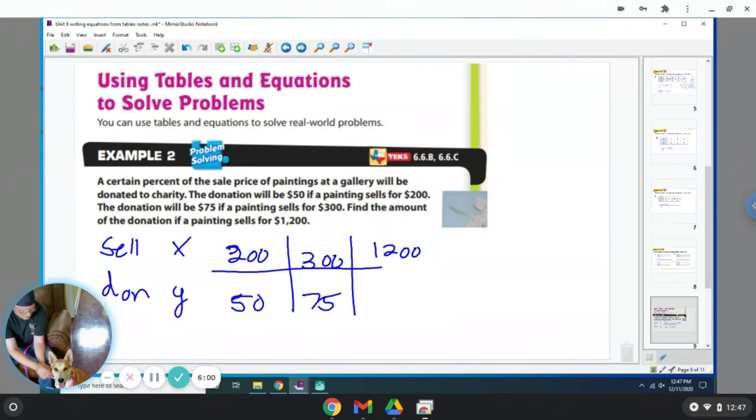So what they're doing is they're trying to figure out what is $1,200. So you need to figure out the equation. So since we're working with these bigger types of numbers, I would assume it's a multiplicative relationship. And so what's happening is how did $200 get to $50? Because it's not by subtracting, because they wouldn't be the same between the $300 and the $75. So how did $200 get to $50? Well, they divided by 4. $200 divided by 4 is 50, and $300 divided by 4 is 75. So my equation would be y is equal to x divided by 4. So to find out the donation, when they sell a painting for $1,200, they're going to do $1,200 divided by 4, which should be $300. So it means they'll get a $300 donation.